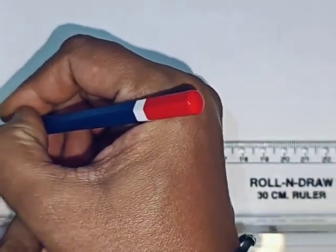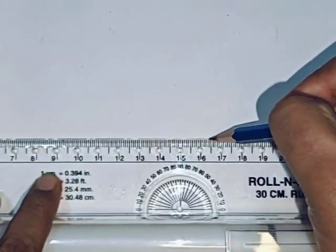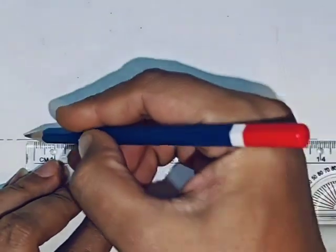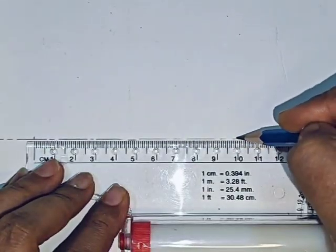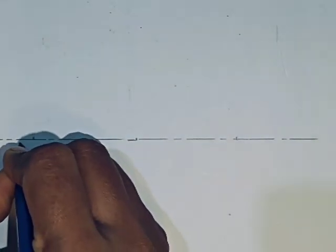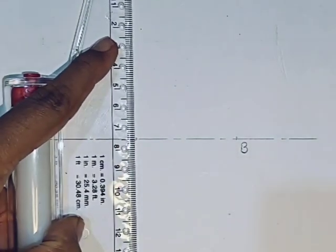I consider here major axis as 100 mm and minor axis as 70 mm. Draw AB which is equal to major axis, that is 100 mm, and CD which is equal to minor axis, which is 70 mm, and mark O as the center.